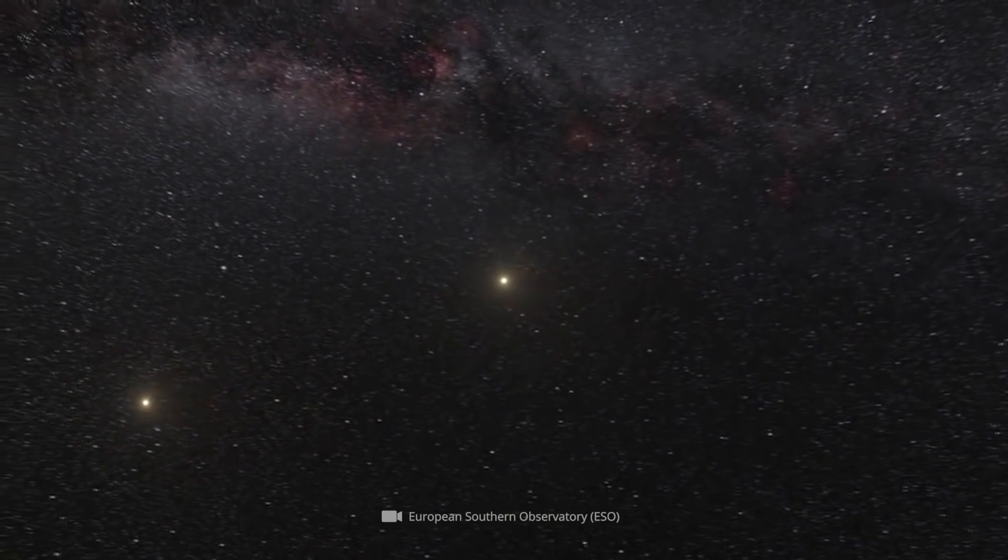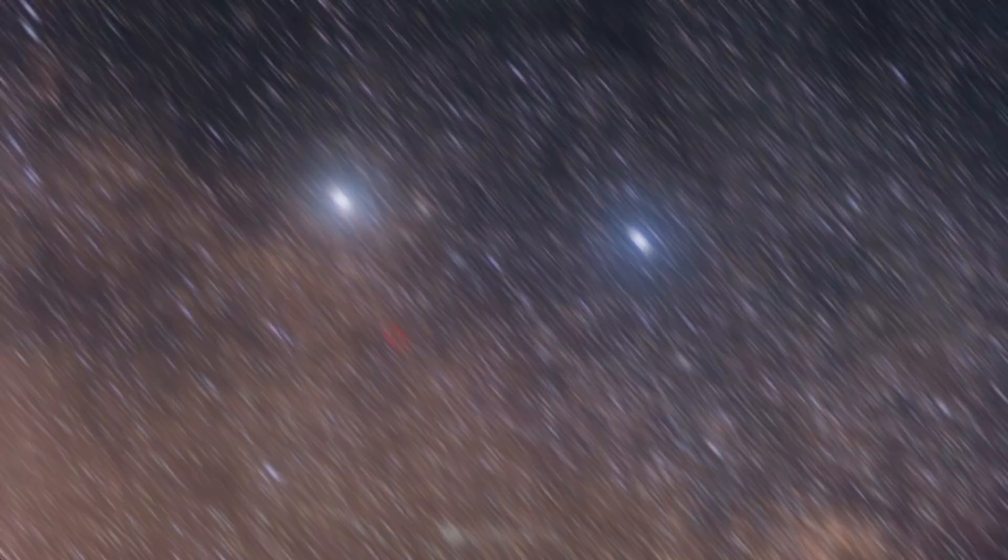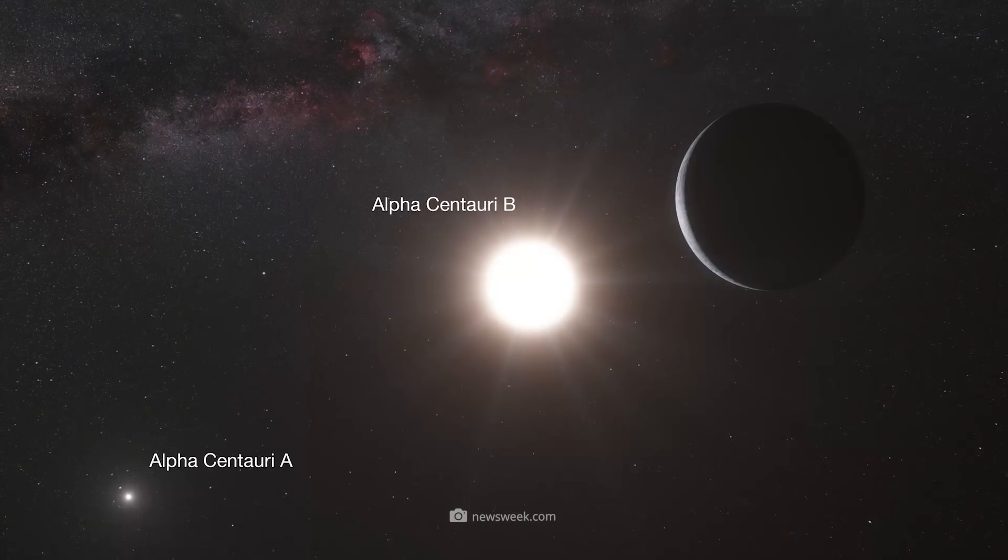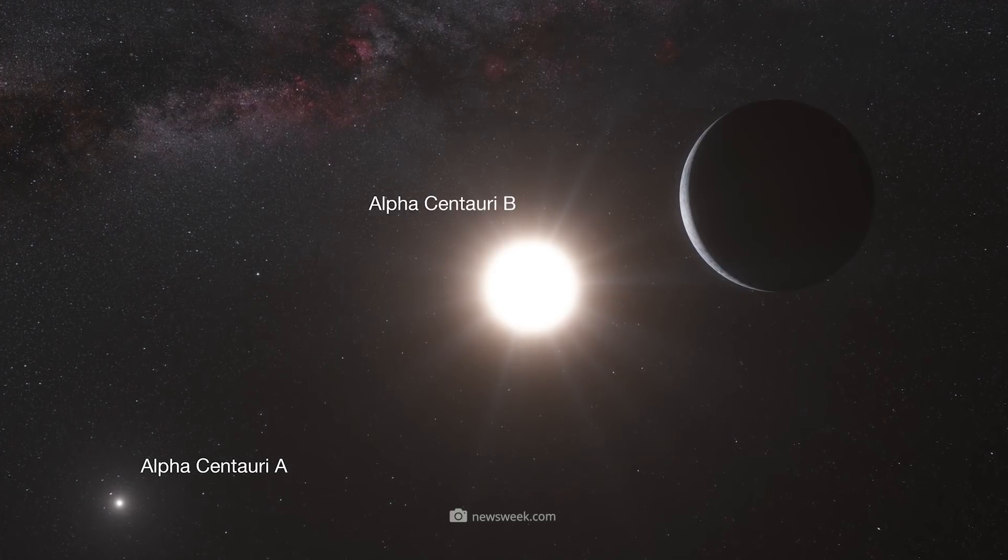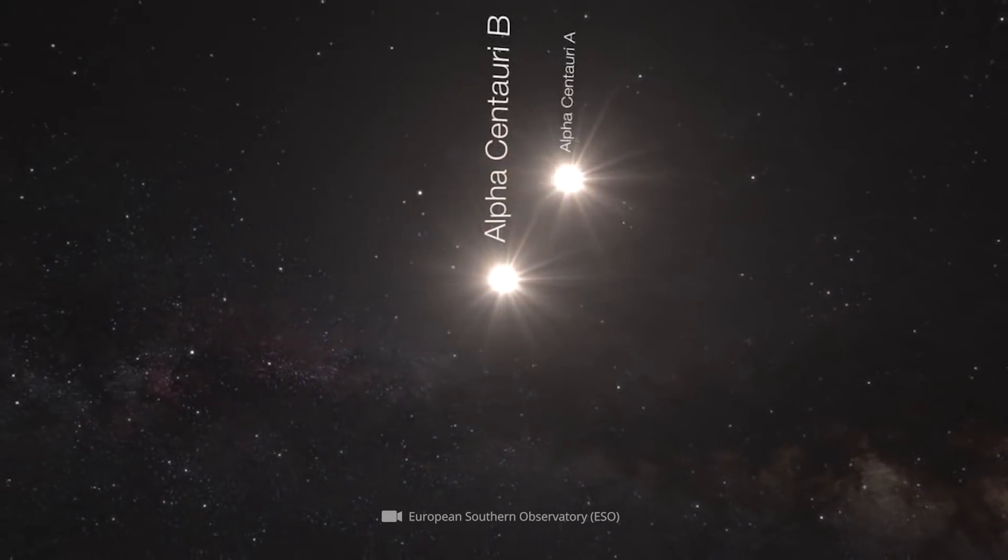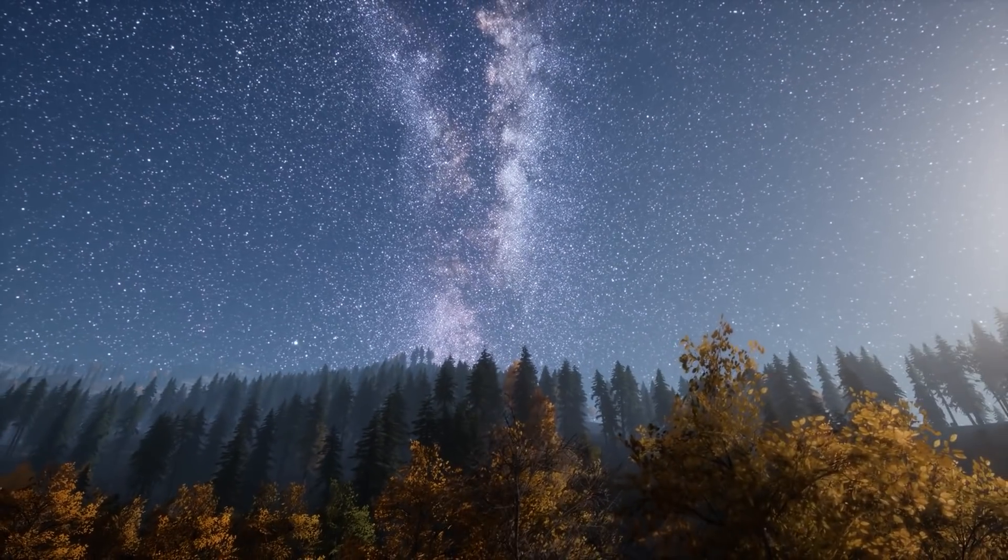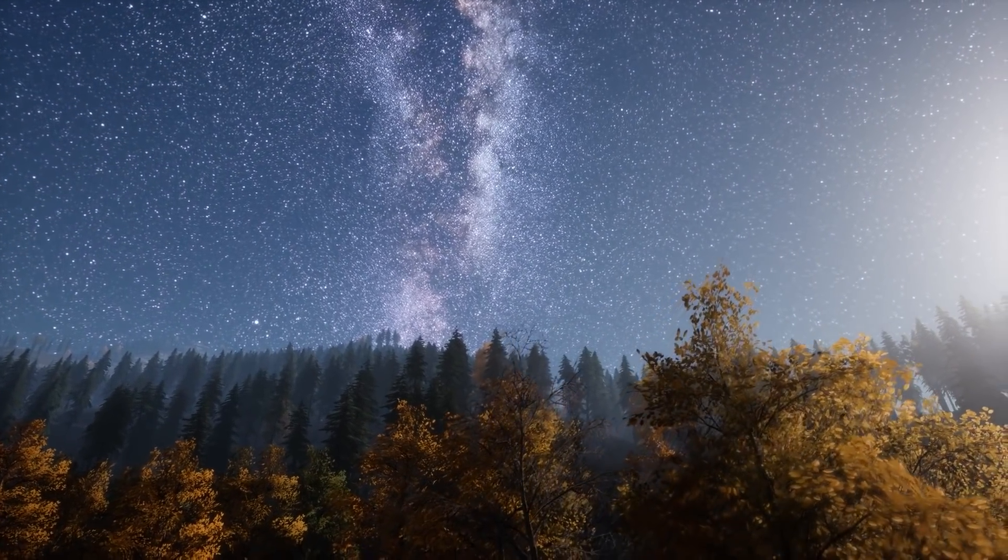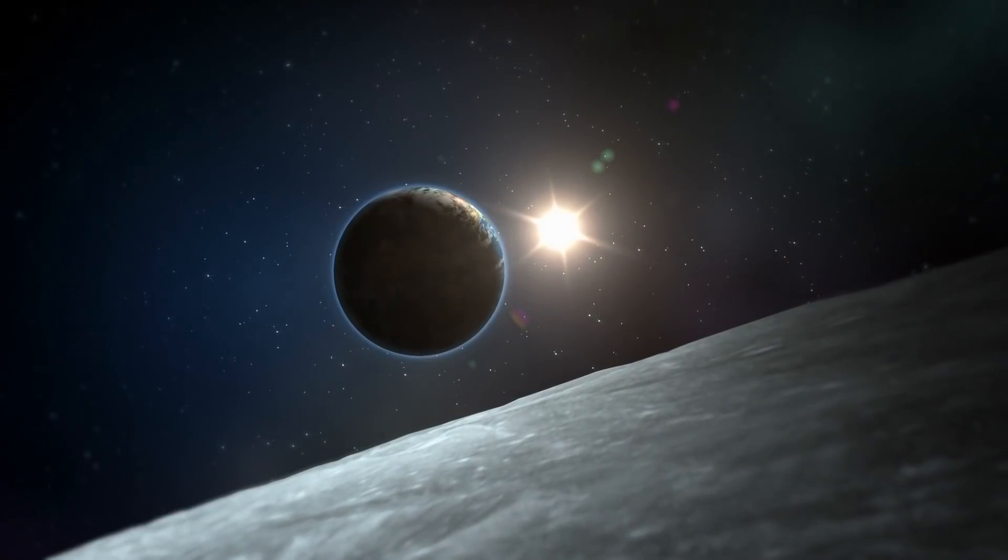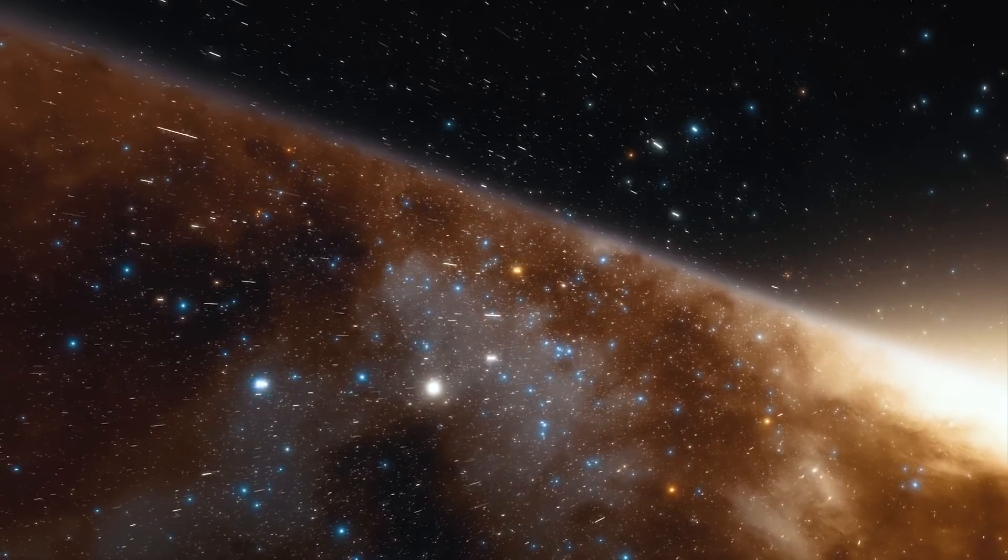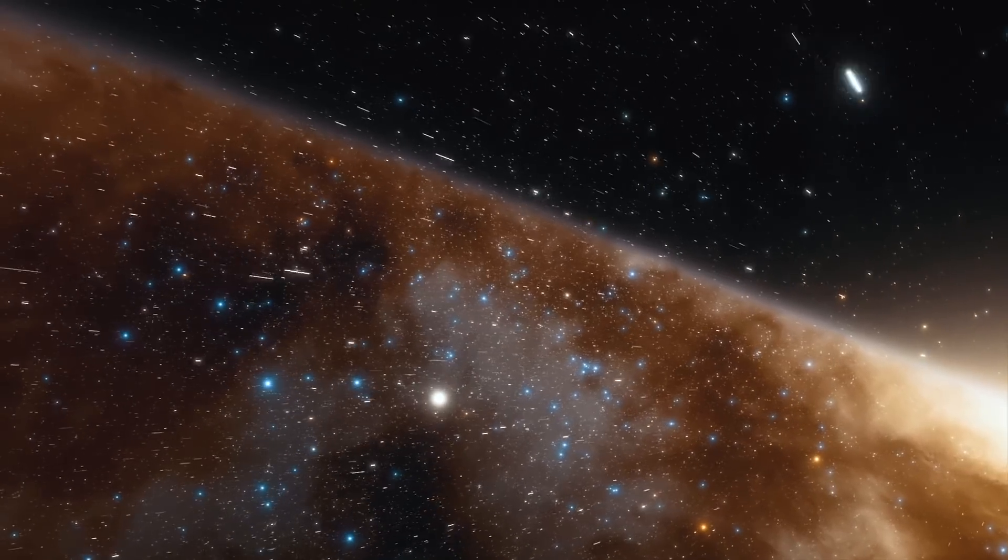To orbit each other once on their strongly elliptical orbits, the gleaming celestial bodies need 79.9 years. The distance between Alpha Centauri A and B varies between 11.5 and 36.3 astronomical units. Remember, the length measure of the astronomical unit, or AU for short, corresponds approximately to the average distance between our blue home planet and the sun. Rounded up, one AU measures to about 9 million miles.